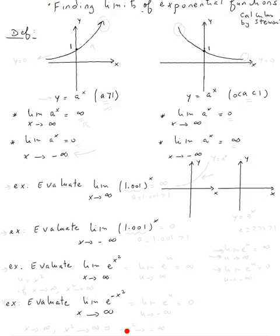The topic here is finding limits of exponential functions. This is the graph of y equals a to the x. If a is bigger than 1, the limit as x goes to infinity, y goes to infinity. And as x goes to negative infinity, it's approaching y equals 0. Remember, the x-axis means y equals 0, so that's why we get 0.